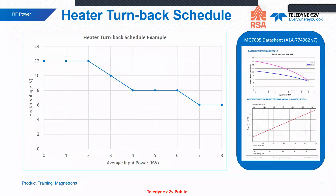When there's no input power to the magnetron, the heaters are switched on at their maximum. Over the course of operation, as we crank up the input power, the filament or heater levels will be turned back. In some cases, when products operate at full maximum conditions, the heaters can be turned off entirely.